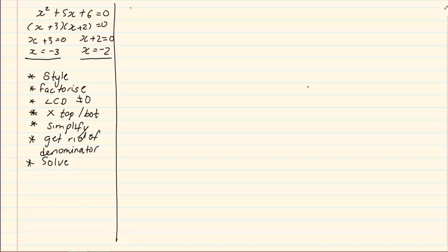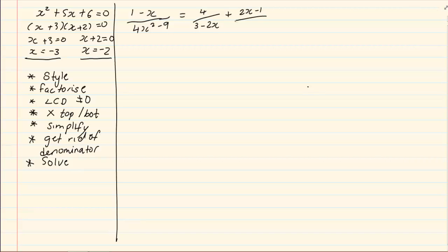Let's do the following example. If we have 1 minus x all over 4x squared minus 9, equal to 4 over 3 minus 2x, plus 2x minus 1 all over 2x plus 3. Now if you look at the equation you will see that the denominator 3 minus 2x is not the correct style, and also 1 minus x is not the correct style.